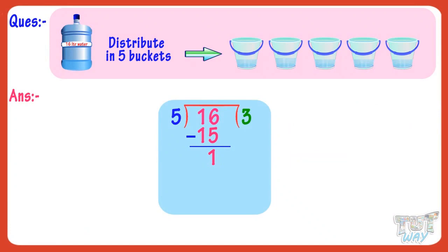When the number left to be divided is less than the divisor, we put a decimal point to the right of the quotient, and put a 0 to the right of our remainder. We put a decimal to the right of the quotient and a 0 to the right of the number we have to divide.